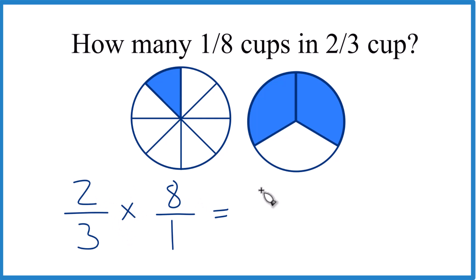Two times eight, that's sixteen. Three times one is three. So how many one-eighth cups go into two-thirds cup? Sixteen-thirds.